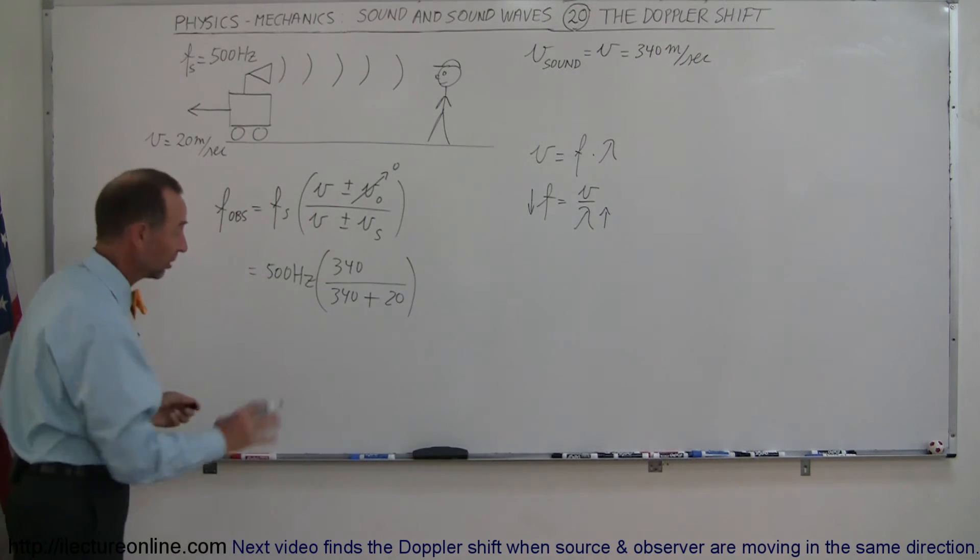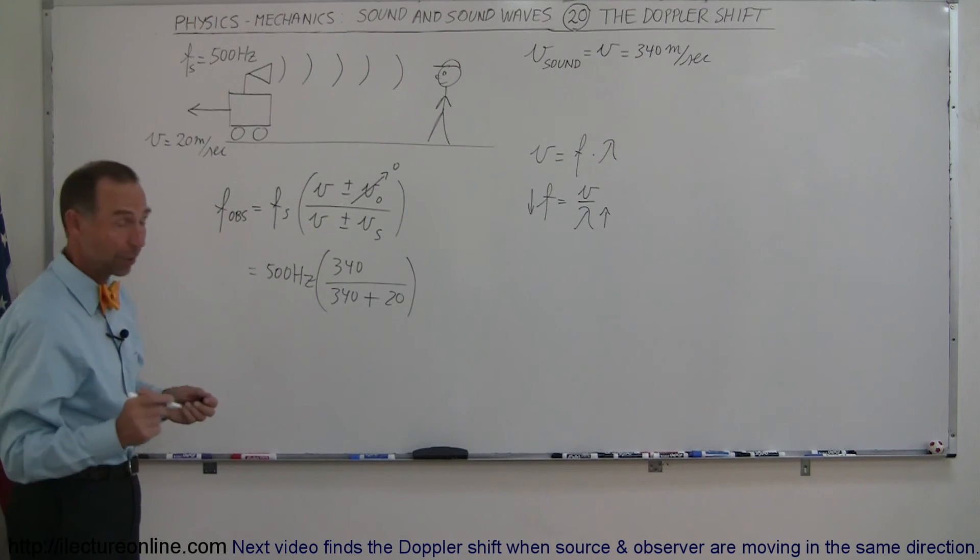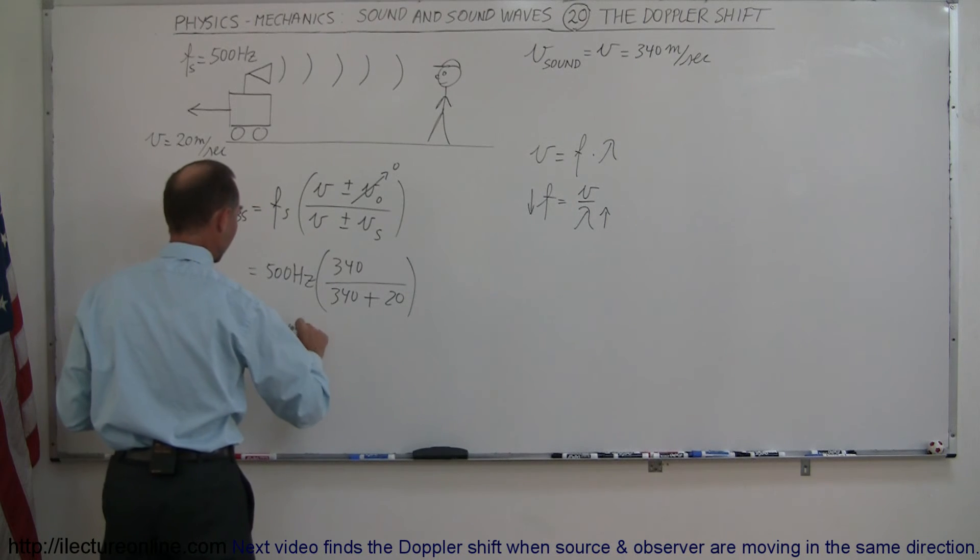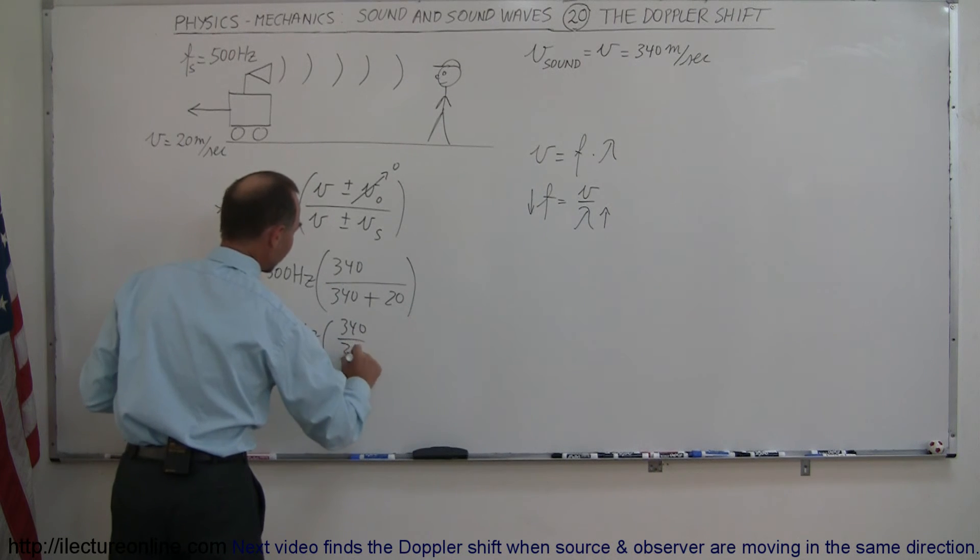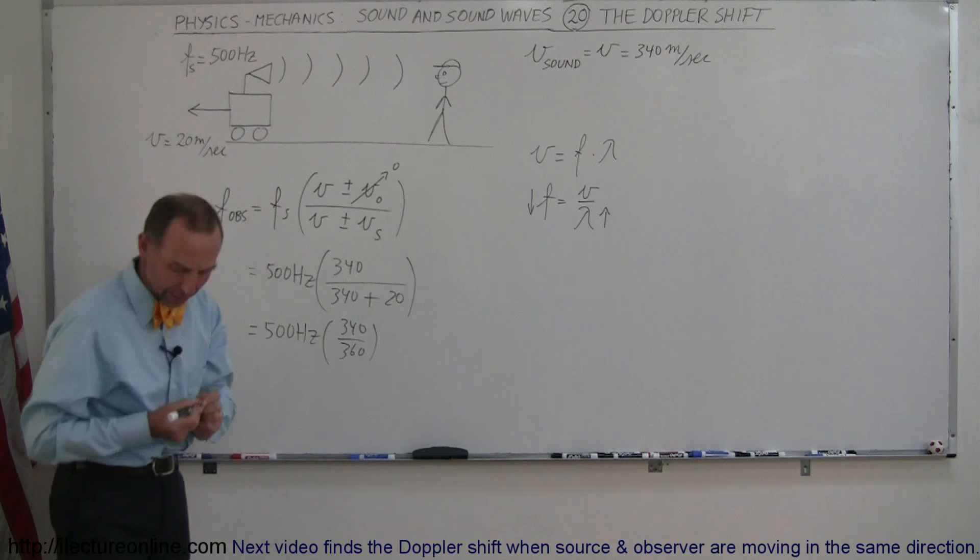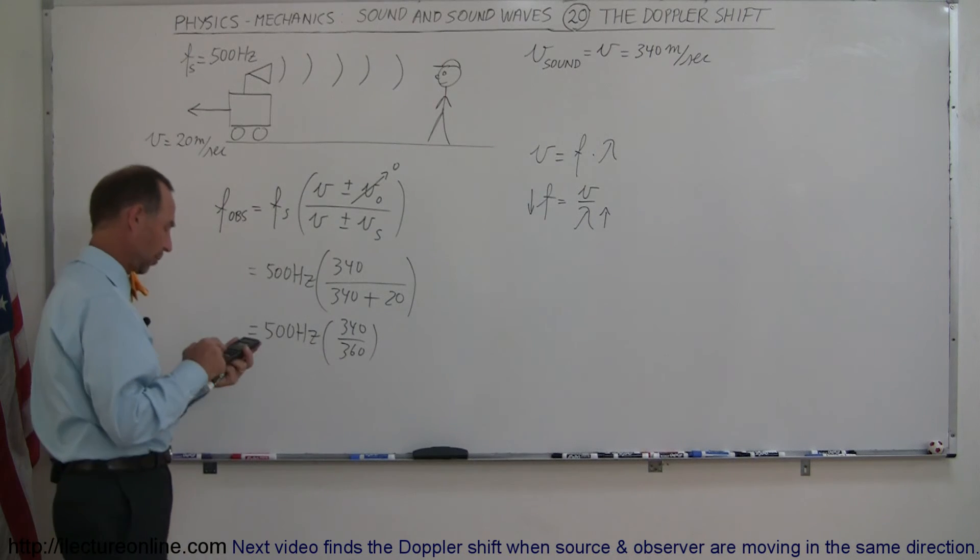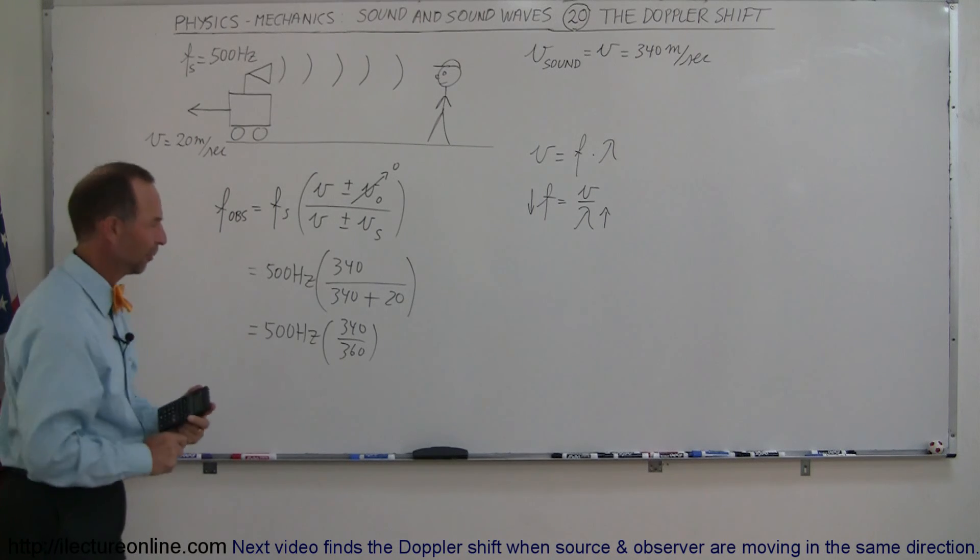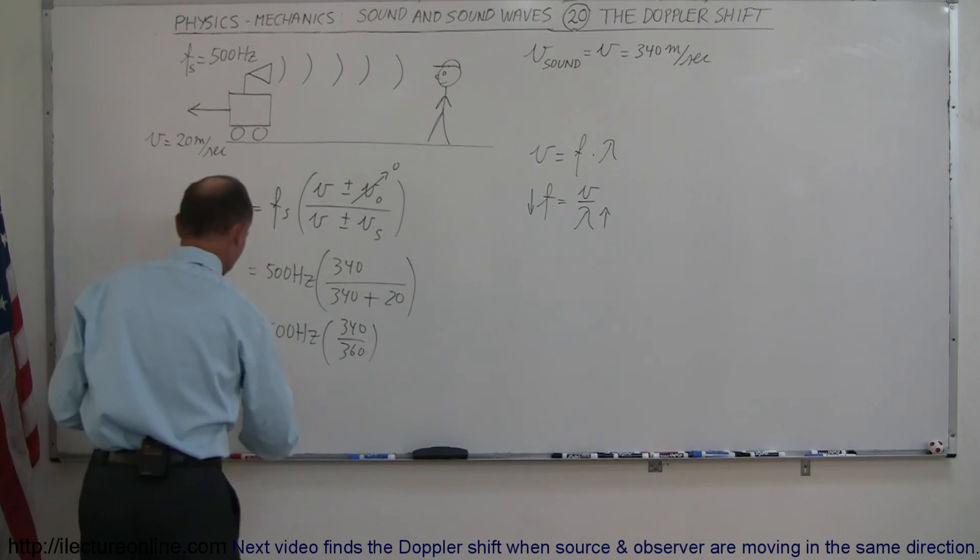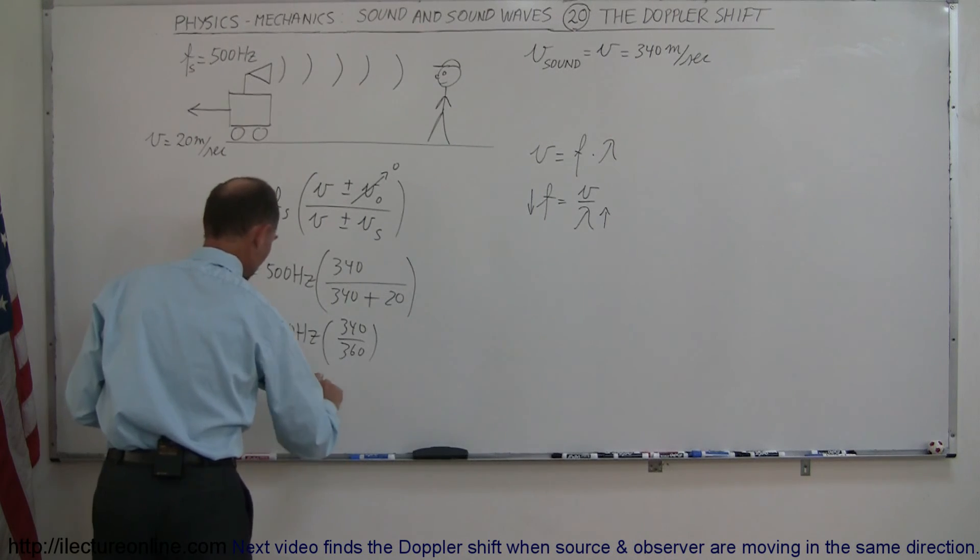Regardless of direction, we realize we need a plus. Now if we plug the numbers in, we get this equal to 500 hertz times the ratio of 340 divided by 360. With the calculator, we can figure out what that equals. So we have 500 times 340 divided by 360, and we get... Oh, there it is. For a moment, I thought I had the wrong number here.